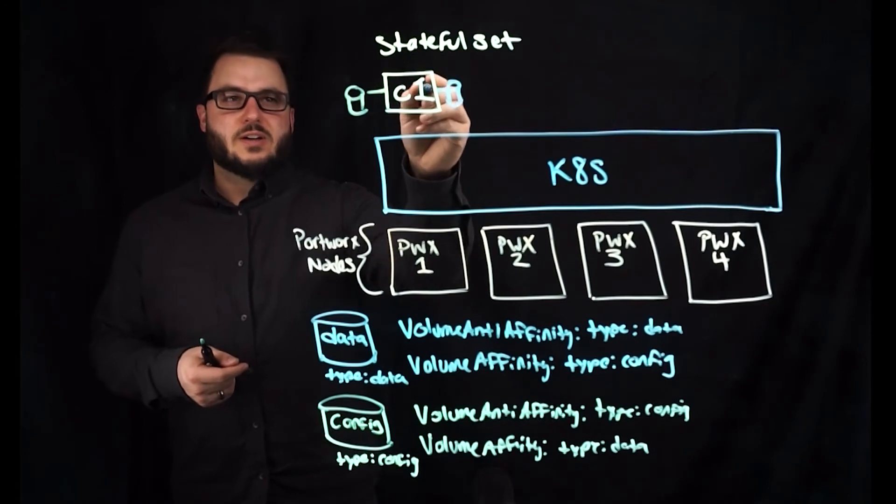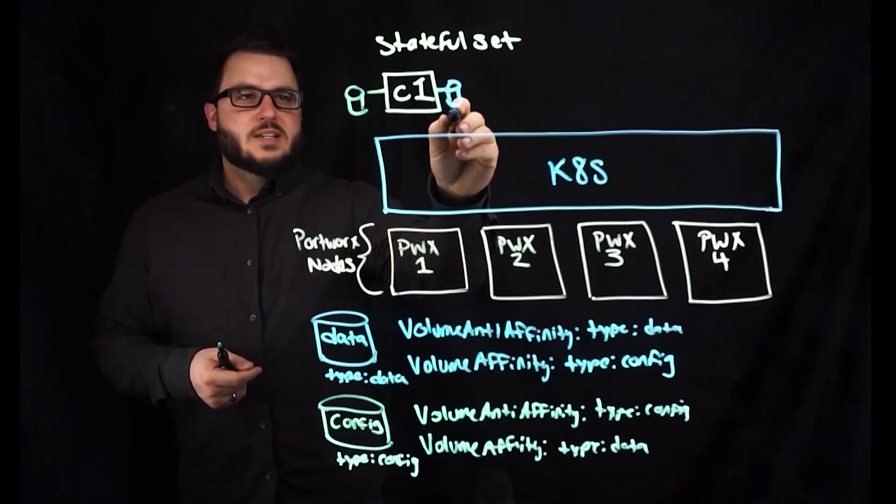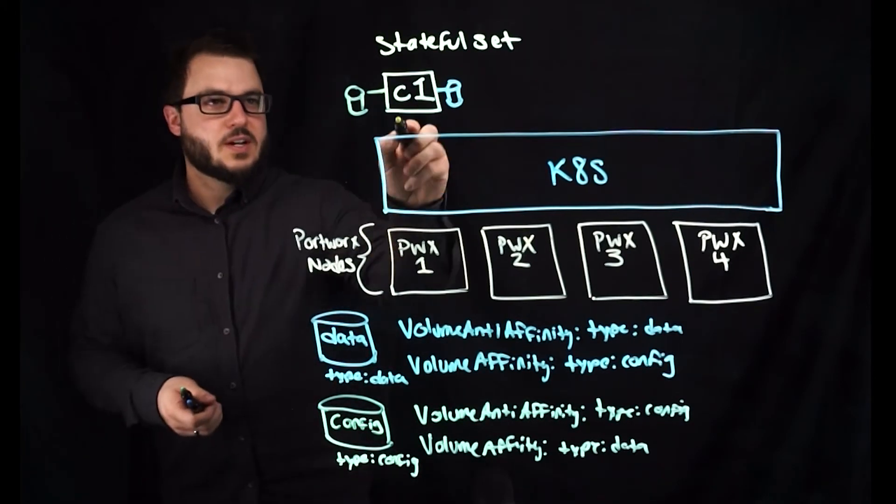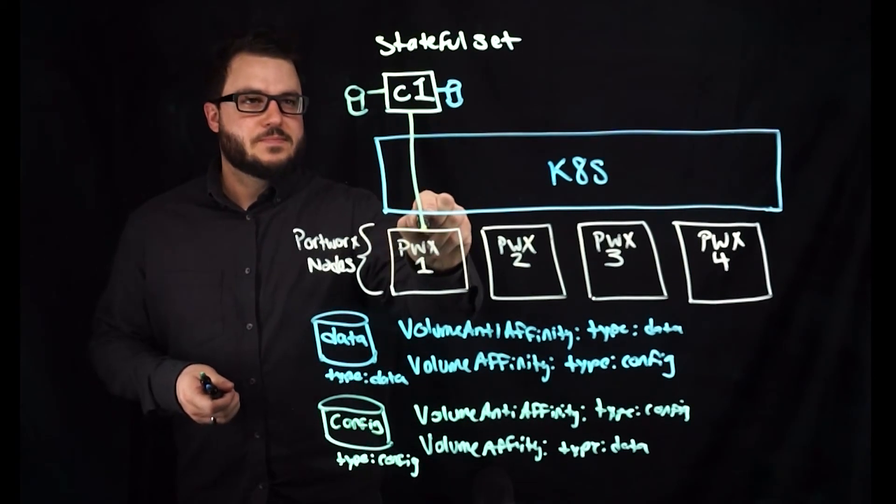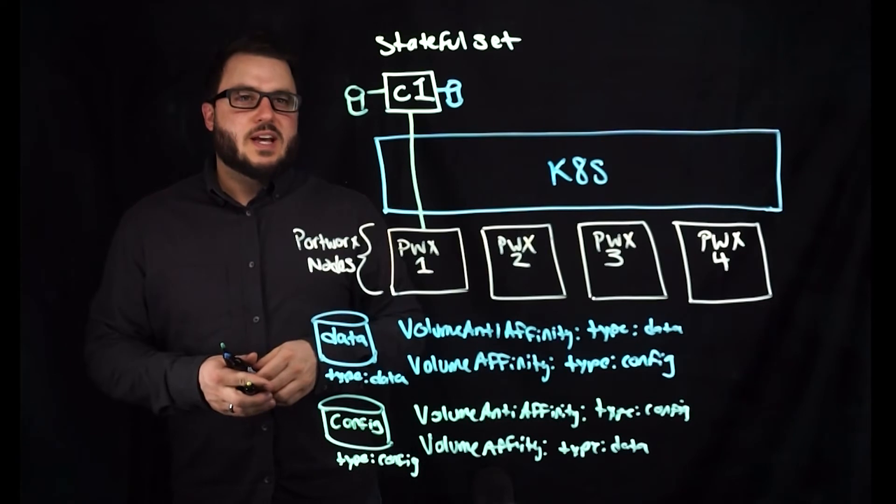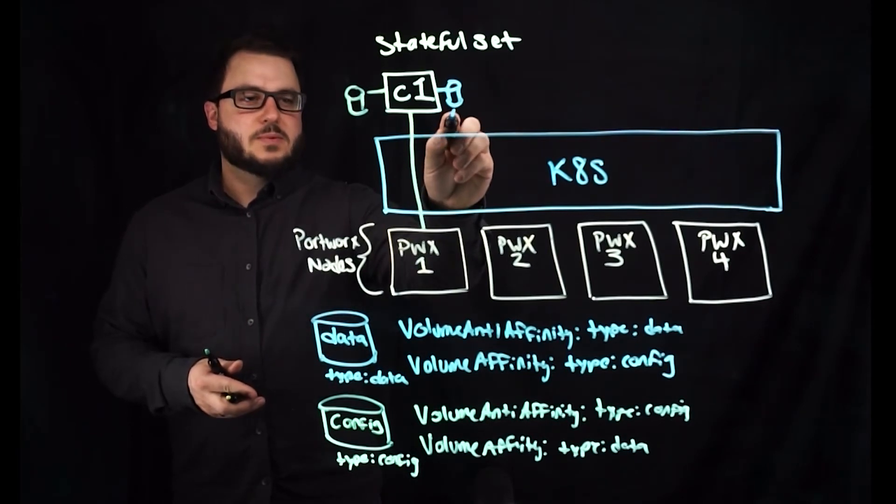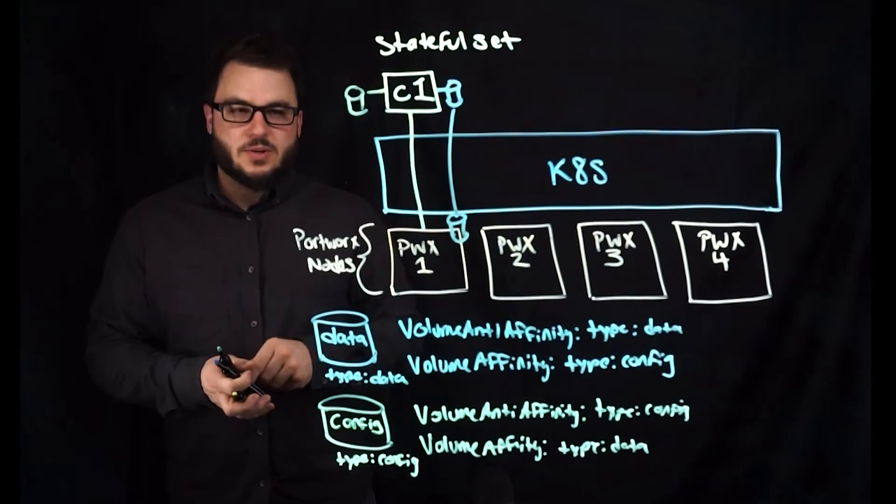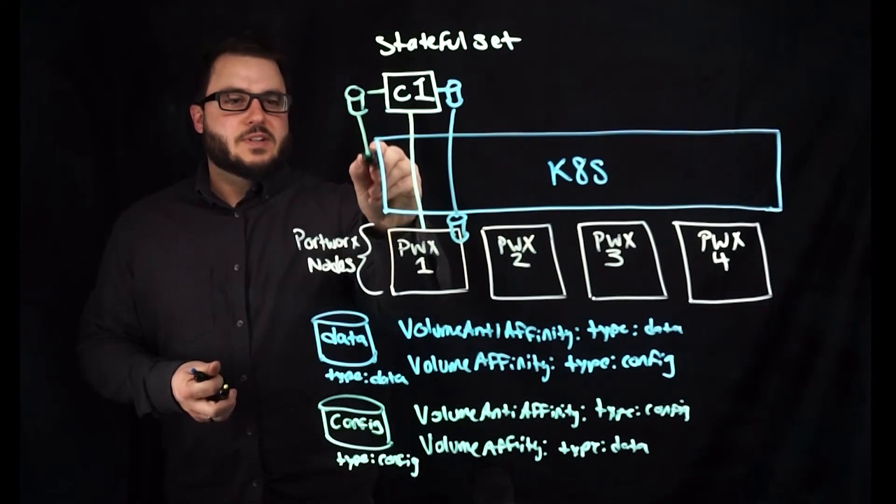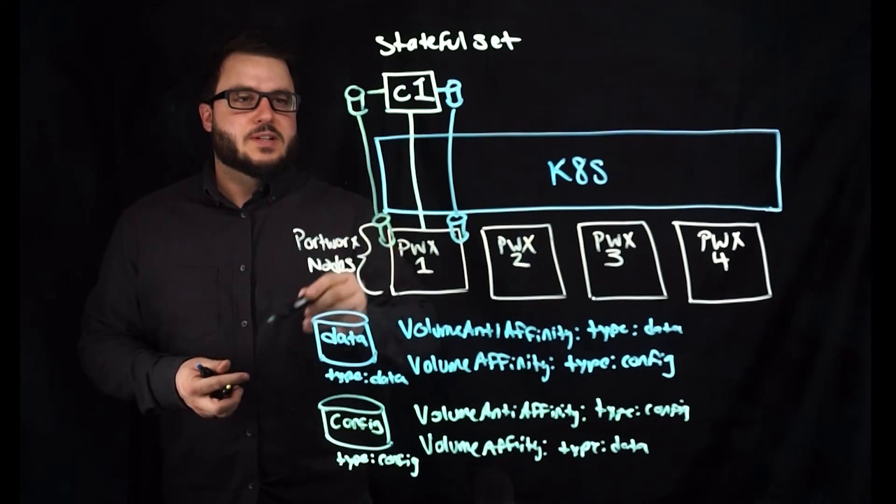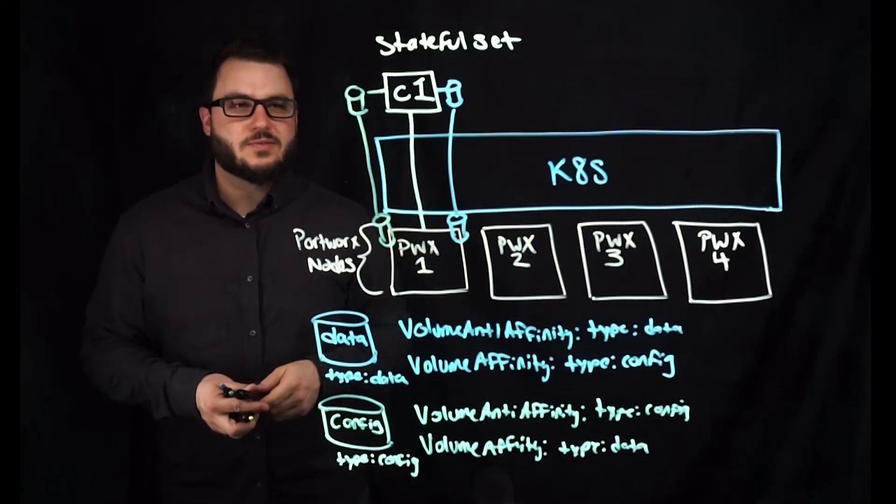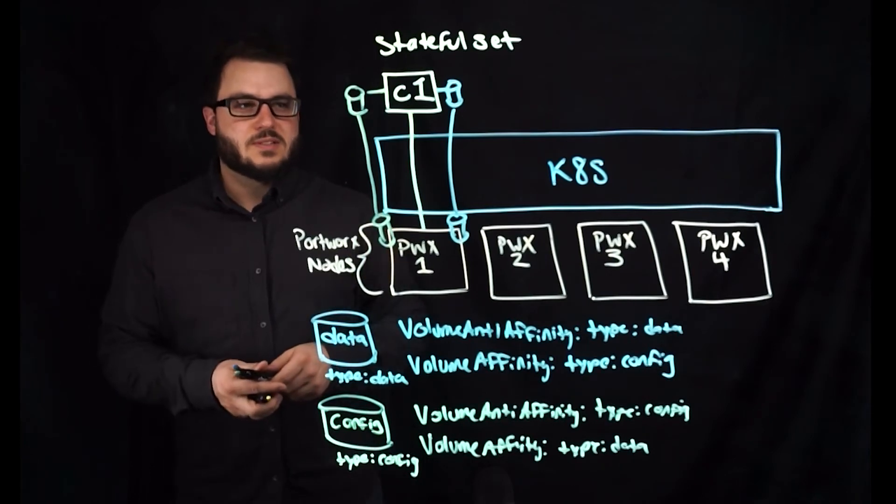So our data volume for node one, say the pod gets scheduled to Portworx node one. So this will say that okay, our volume is going to be going down and also be placed on node one. And our affinity rule says also place the configuration volume on node one as well. So you have the data landing next to the configuration also on the same node as the pod.